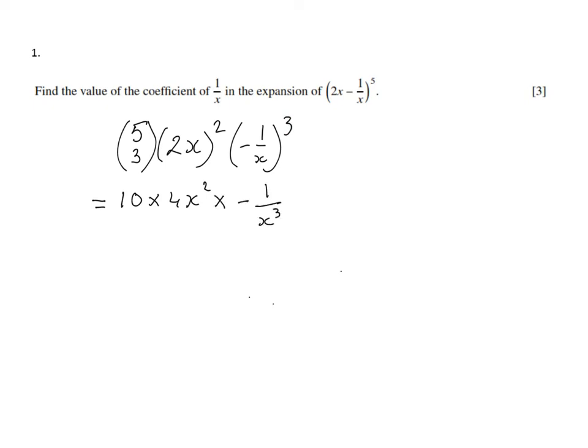Now if I simplify this, I'm getting -40x squared over x to the power 3. Take away the common factor x squared, so -40 over x.